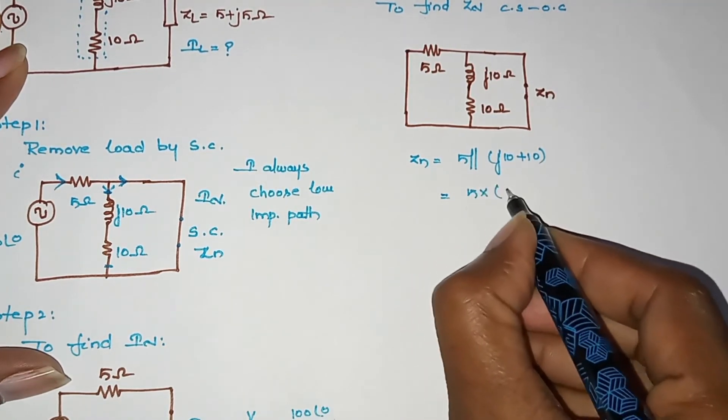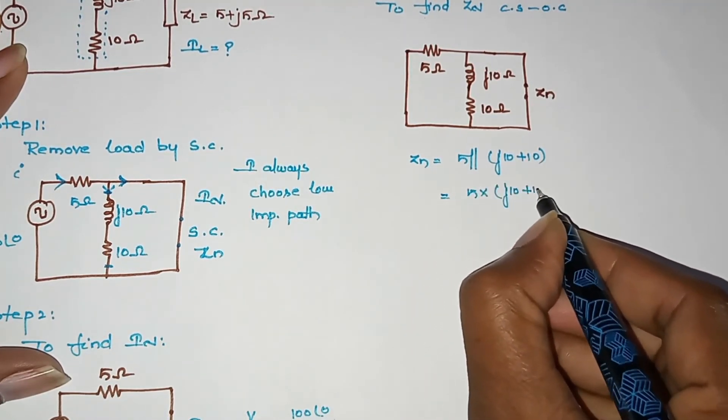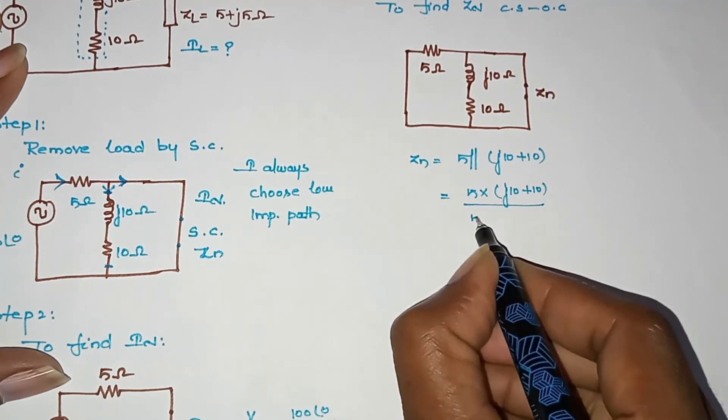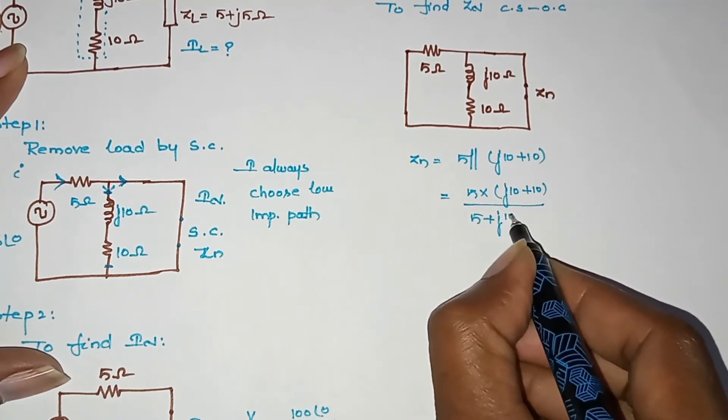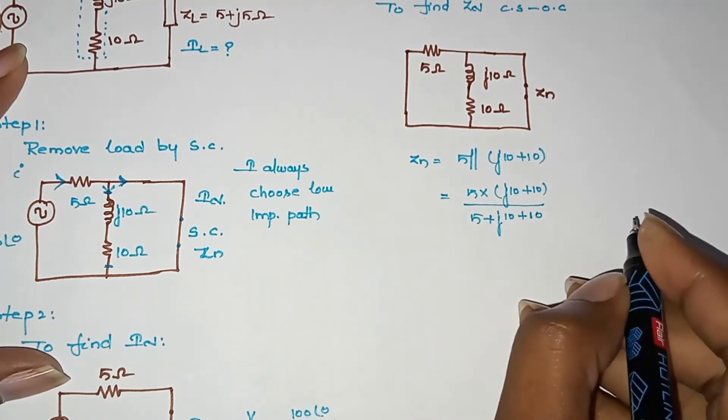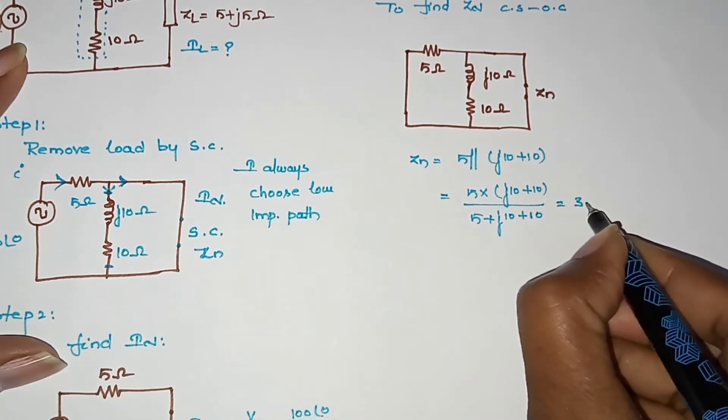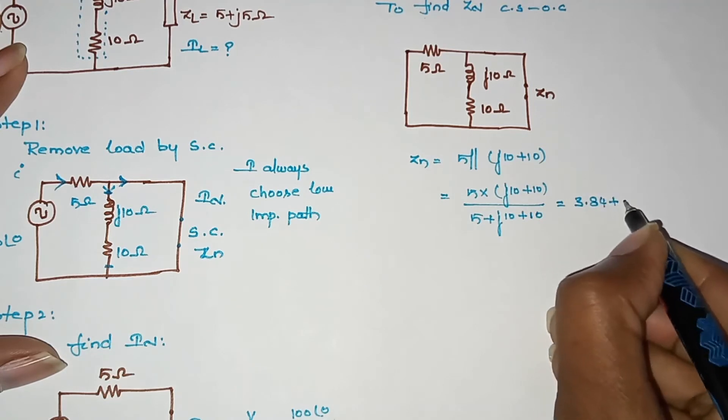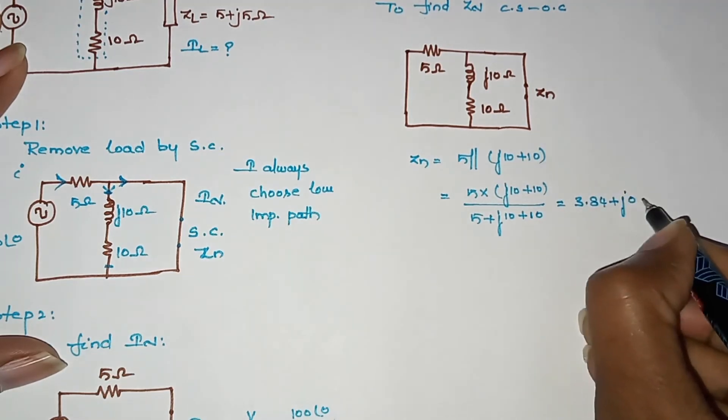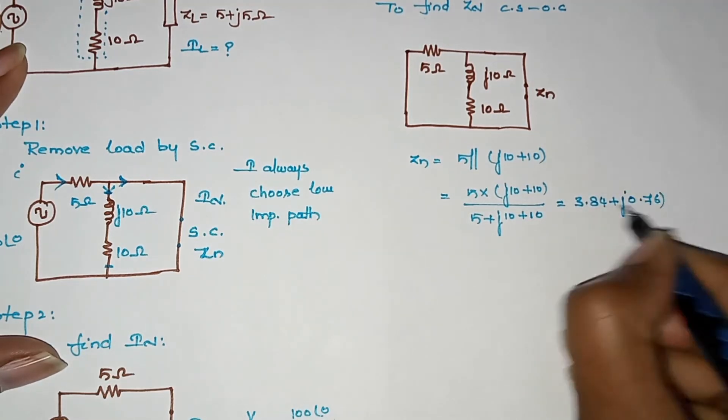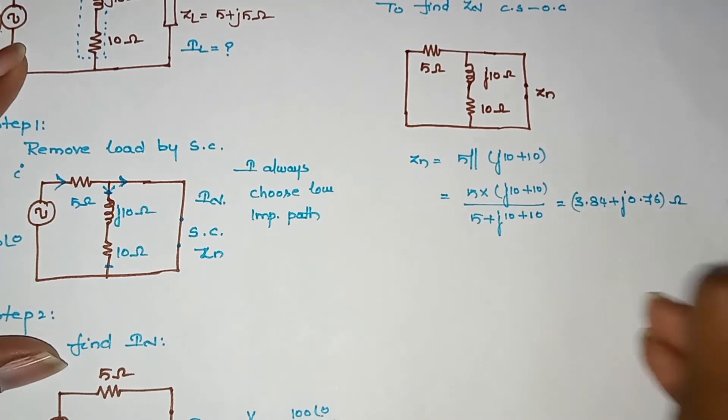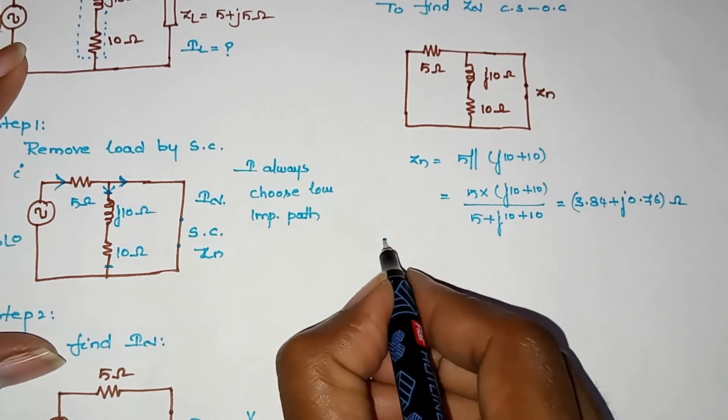Now ZN is 5 parallel to j10 plus 10 ohms. This is my ZN. 5 into j10 plus 10 by 5 plus j10 plus 10. This value is 3.84 plus j0.76 ohms. This is my ZN value. Now we will go to step 4.